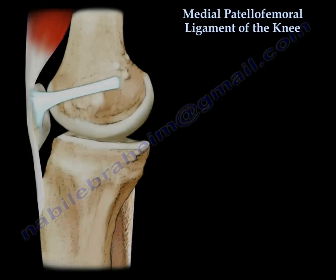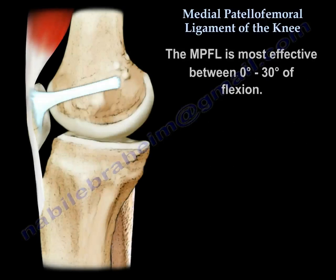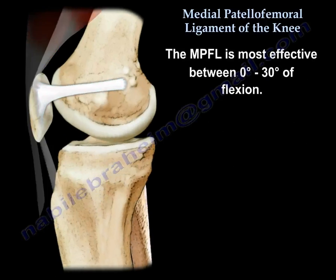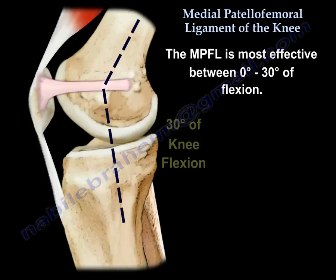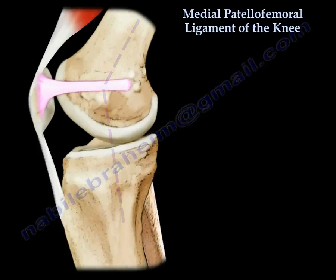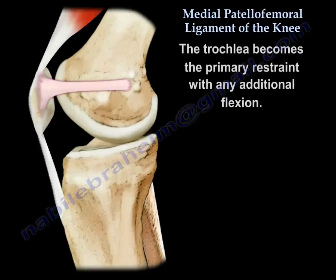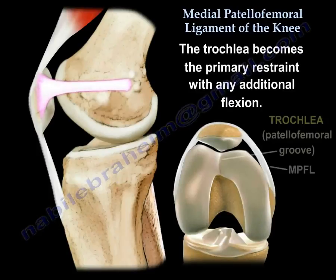The medial patellofemoral ligament is most effective between 0 and 30 degrees of flexion. The trochlea becomes the primary restraint with any additional flexion.